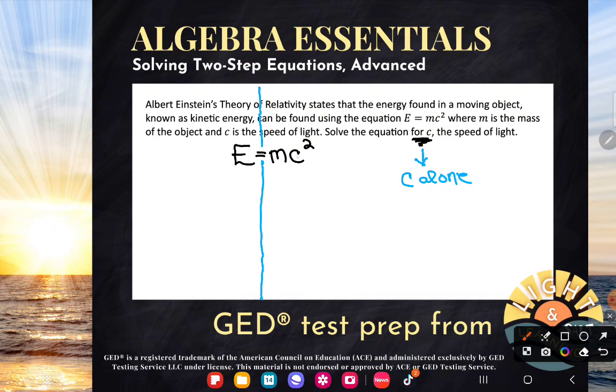And then I want you to just come in and color whatever letter you're trying to get alone. c is the thing that we're trying to get alone. So it is going to stay solid. We're not going to move it. We're going to leave it be, but we're going to move everything away from it. And we're going to take all the other numbers, all the other operations away. So you can see that there's two things happening to c right now. We have this m shoved against c, which means the m is multiplying. And we have this exponent on c. So it's being squared.